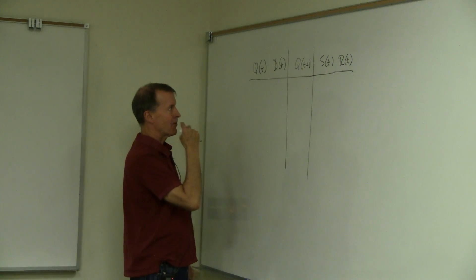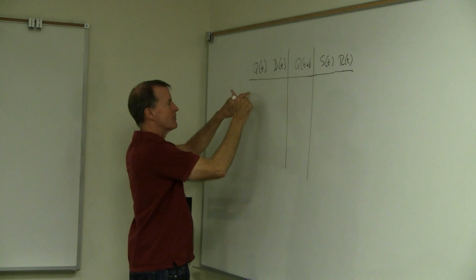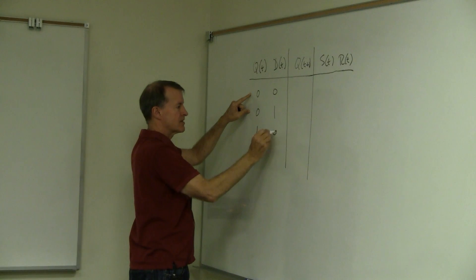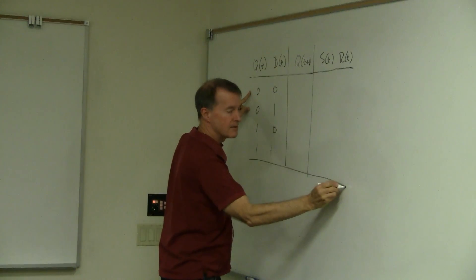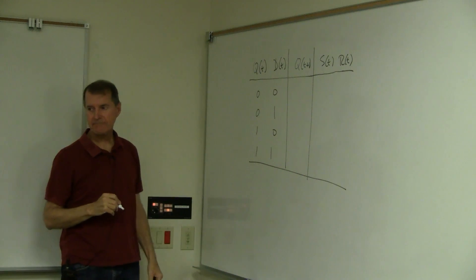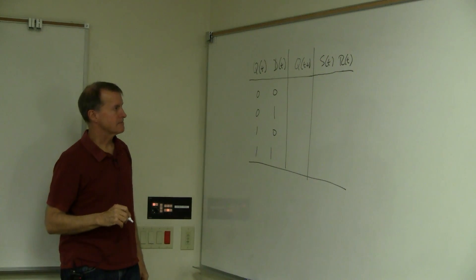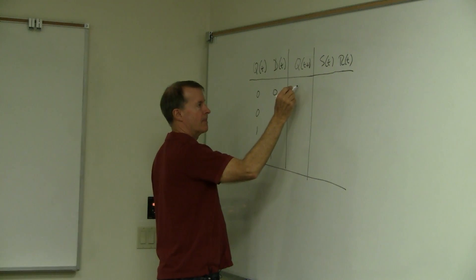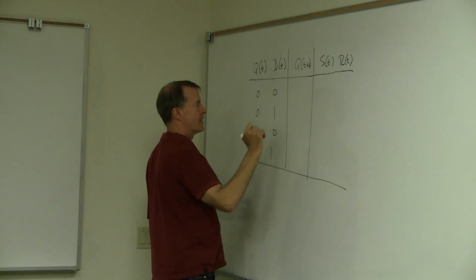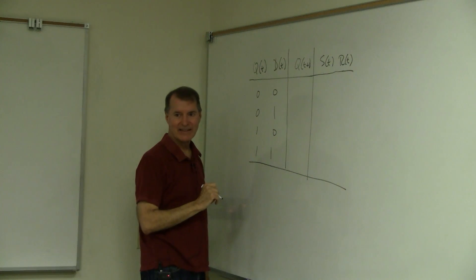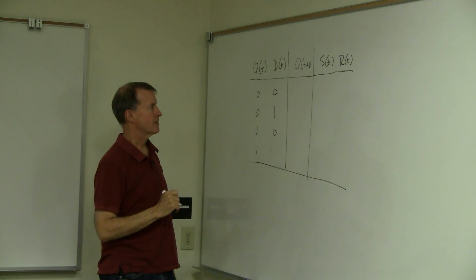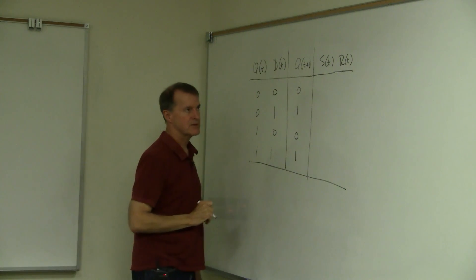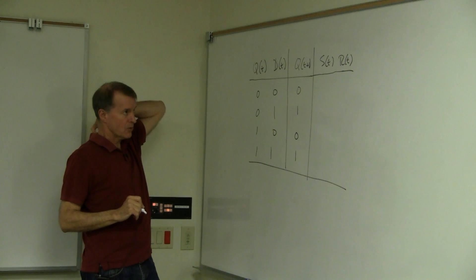You could probably figure this out in your head without all this systematic procedure, but we'll do it anyway to show how the process works. What are the possibilities of Q at time T and D at time T? 0,0; 0,1; 1,0; 1,1. And what should Q at time T+1 be? It's 0, 1, 0, 1 — because Q at T+1 equals D at T.